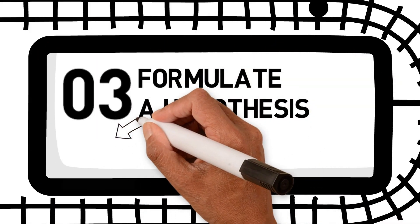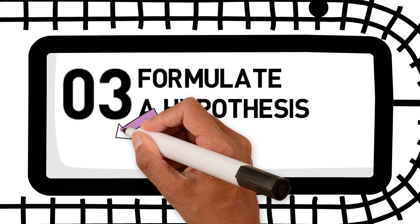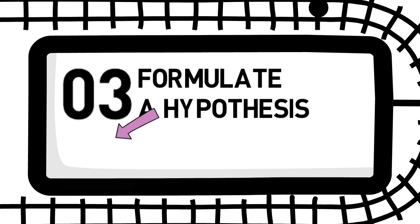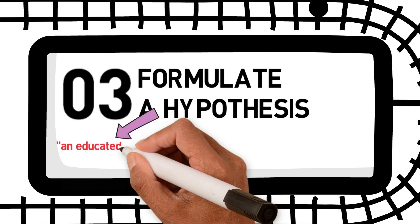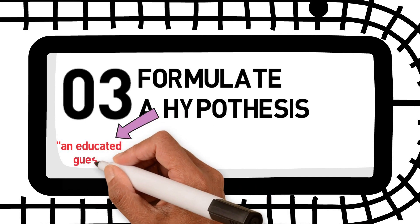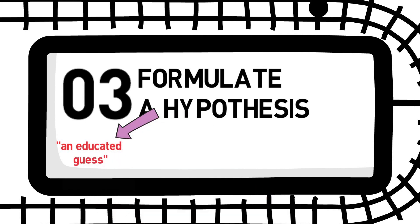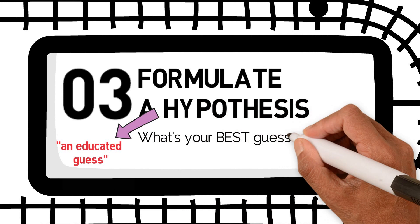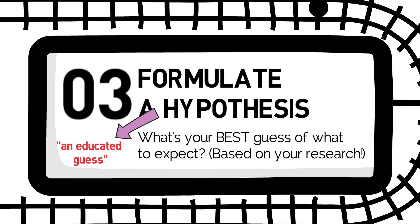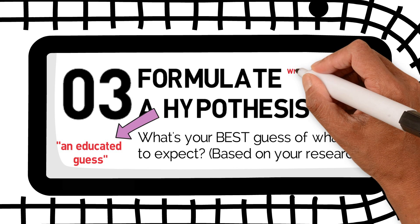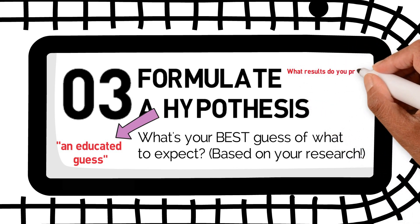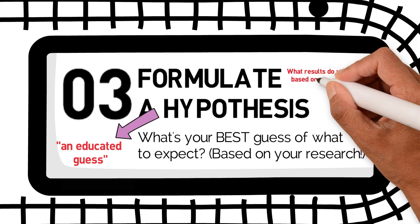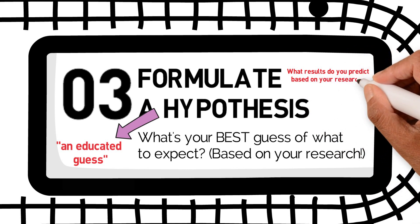Step three is to formulate a hypothesis. This is a bit of a guessing game, but we're making a guess based on the research and data you've gathered. Looking at benchmarks, current best practice, and what your competitors are doing — what's your prediction for what you need to do, and what will happen as a result? Document this hypothesis, and it's what's going to help you prove whether it's true or false.